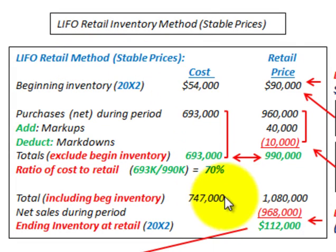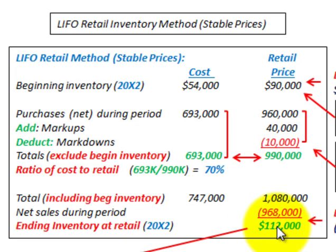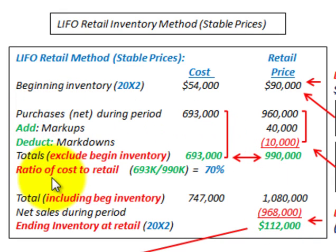We're going to have some costs and then some retail prices. What we have to do is determine our ending inventory at the end of the year at the retail price. Once we determine that, we can determine our ending inventory at LIFO cost. So let's look at our example. We have to come up with this ratio of cost to retail price.